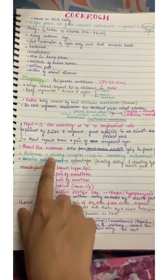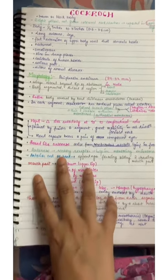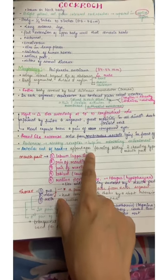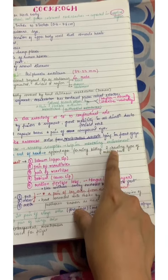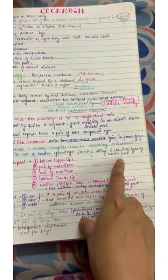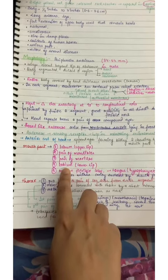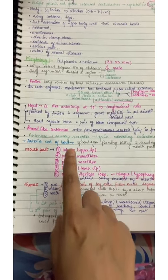Antenna is a sensory receptor helping in monitoring environment. Then anterior end of the head appendages forming biting and chewing types of mouth parts. The photo in NCERT you need to see it because it comes in questions.